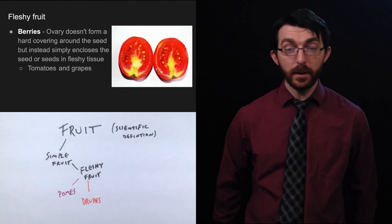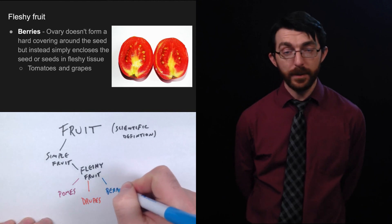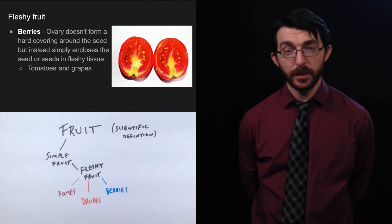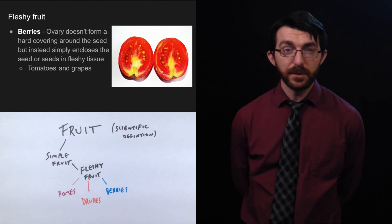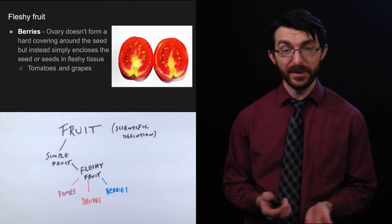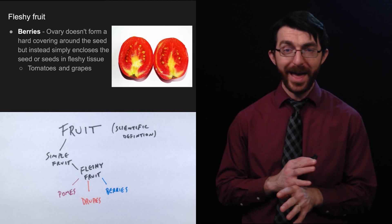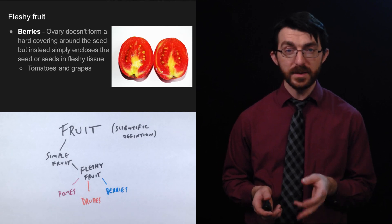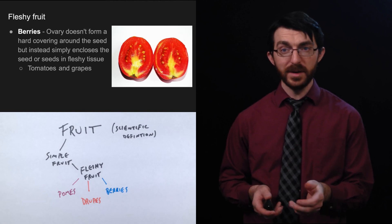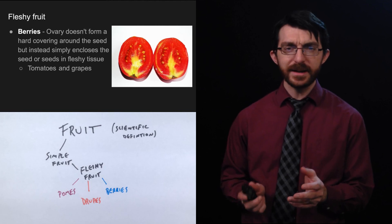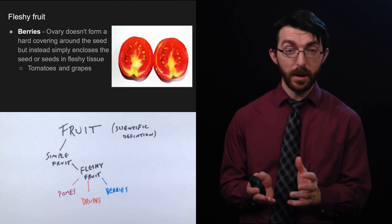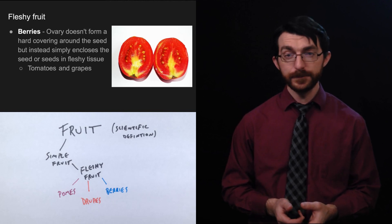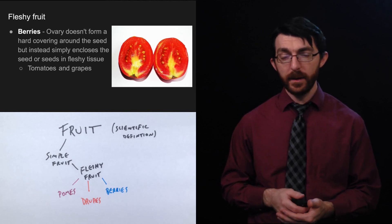We got pomes, we got drupes. We also have berries. Berries are another kind of fleshy fruit. And here we have our first, oh, I didn't know that. Actually maybe you did. This is one of the first smart-alecky science things that people learn is that tomatoes are actually fruit. Boy, do we have some more surprises for you, but let's just stick on tomatoes for a second. Turns out tomatoes are actually berries because a berry is an ovary that doesn't form a hard covering around the seeds, but instead it just encloses the seed or seeds in fleshy tissue. So you know how, like in a tomato, the seeds are really small and soft. You can just eat them. It's not a problem. Well, it's because they're not protected in a hard covering like they were for drupes. They're just suspended in this fleshy tissue. So grapes and tomatoes are both examples of berries. And funny, neither of them have berry in their name.